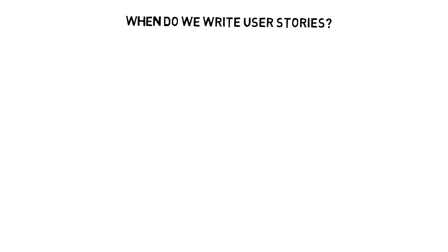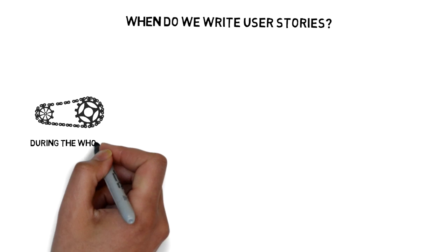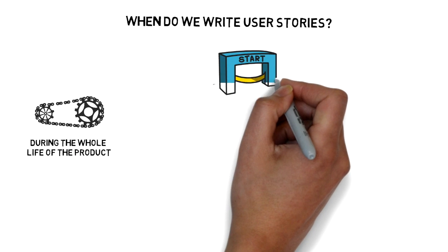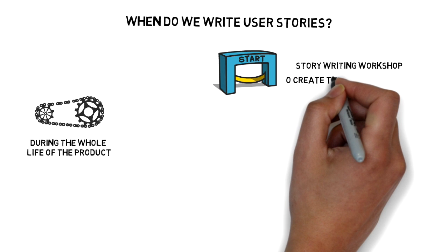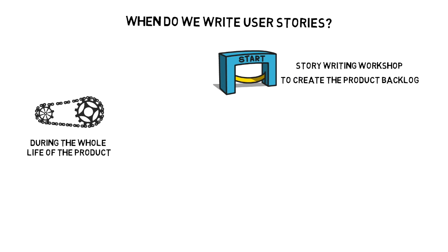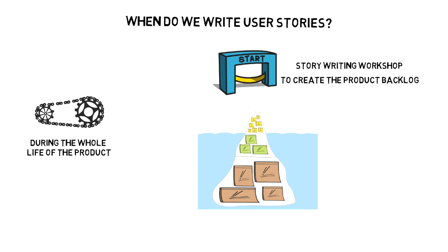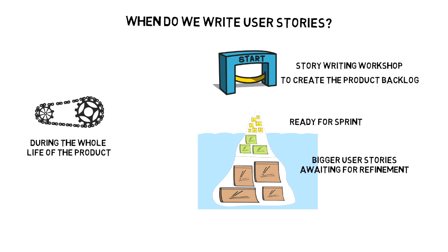Finally, when do we write the user stories? User stories are written during the whole life of the product. Usually, a story writing workshop is held at the start, where team members participate with the goal of creating a product backlog that describes the functionality to be added over the course of product development. Some of these user stories will be big ones that will later be split into smaller ones that can fit into a single iteration. New user stories can also be written and added to the product backlog at any time and by anyone.